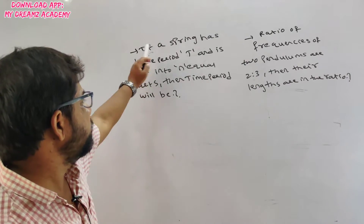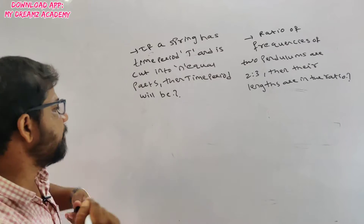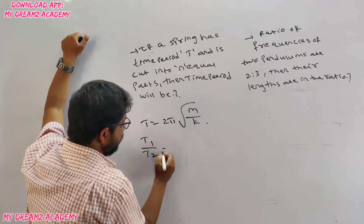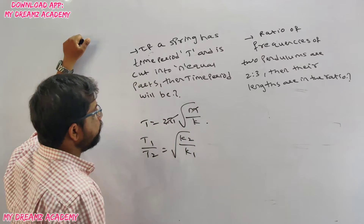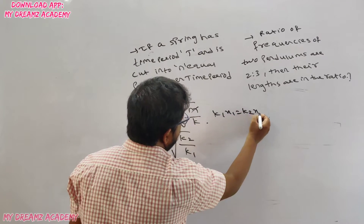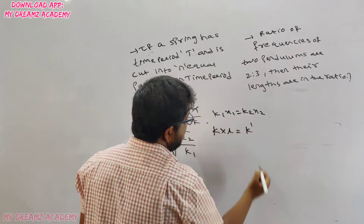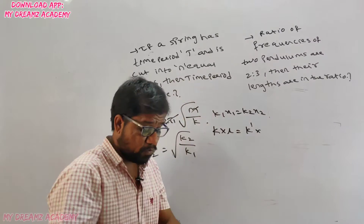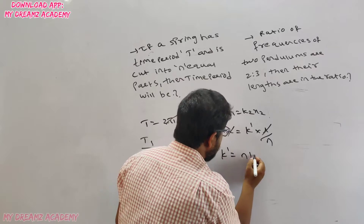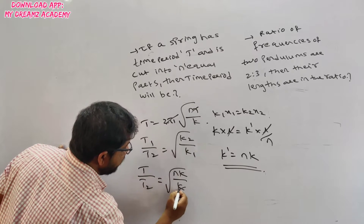Question: If a spring has time period T and it is cut into n equal parts, what is the new time period? The formula is T = 2π√(m/k), so T₁/T₂ = √(k₂/k₁). Using k₁x₁ = k₂x₂, the original spring constant is k and original length is l. After cutting into n parts, each part has length l/n. Substituting: k·l = k'·(l/n), so l cancels and k' = nk. Therefore T/T₂ = √(nk/k) = √n, giving T₂ = T/√n.